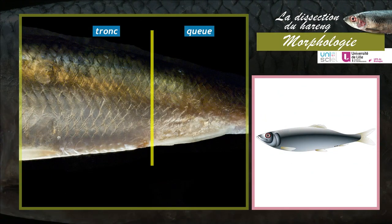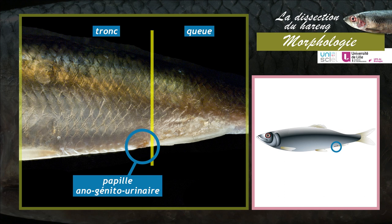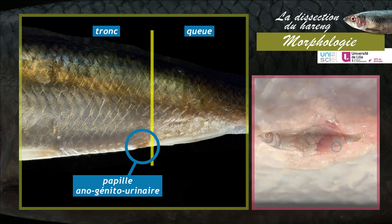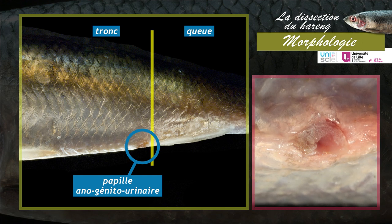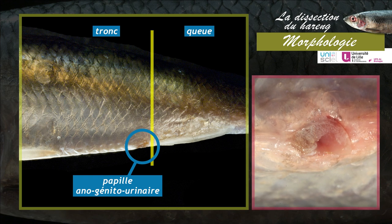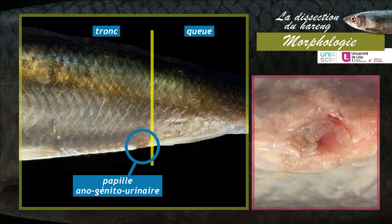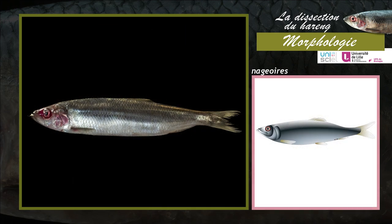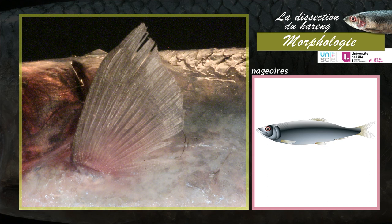Dans la partie terminale du tronc, en position ventrale, est visible la papille anogénitourinaire. À ce niveau débouchent les appareils digestif, reproducteur et excréteur. Le hareng possède des nageoires impaires et des nageoires paires. Elles sont souples et soutenues par des rayons osseux d'origine dermique, les lépidotriches.